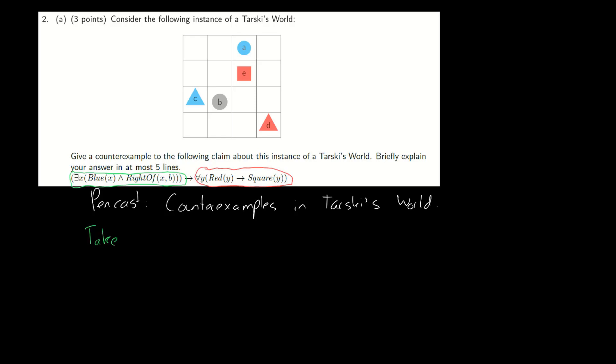The first thing says there should be something that is blue and to the right of B, so we need to find the blue thing to the right of B. Well there's two blue things, C and A, but only one of them is to the right of B, so we'll take A.